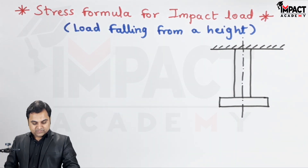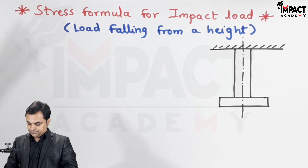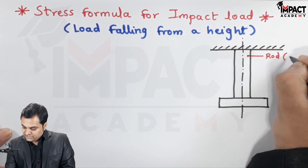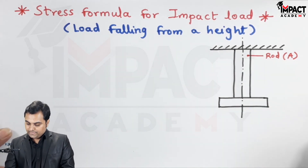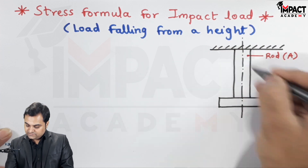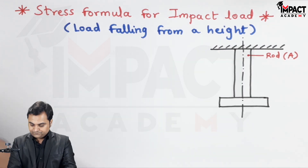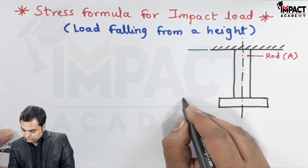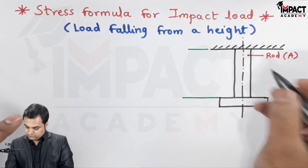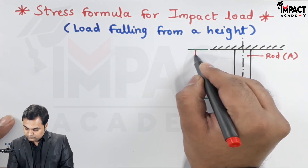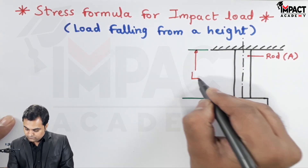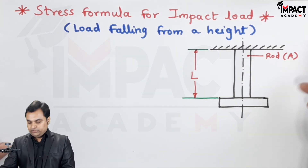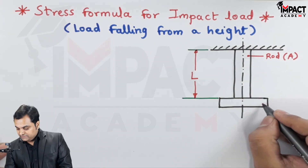Here there is a rod which is having area capital A, and L is the length of this rod. At the end of this rod, a collar is attached.